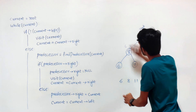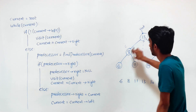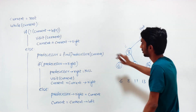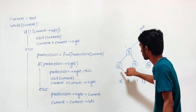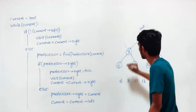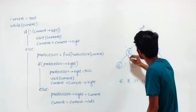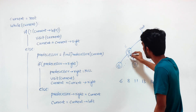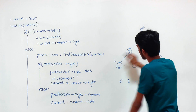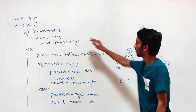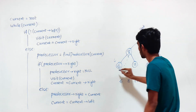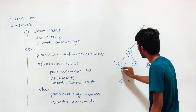Current moves to node 8. Since 8 has a left subtree, we go to the else part and find the predecessor, which is 6. Since the predecessor's right does not exist, we form the link from 6 to 8, then give control to 6. When we are at 6 with no left subtree, we simply visit 6 and move to the right.